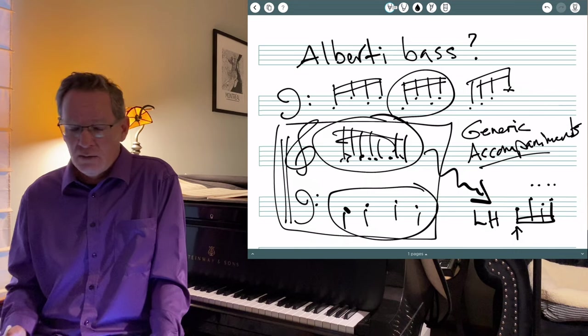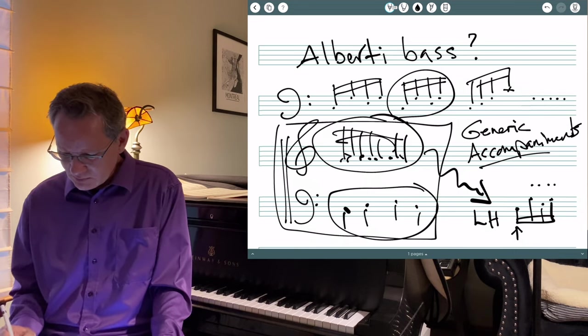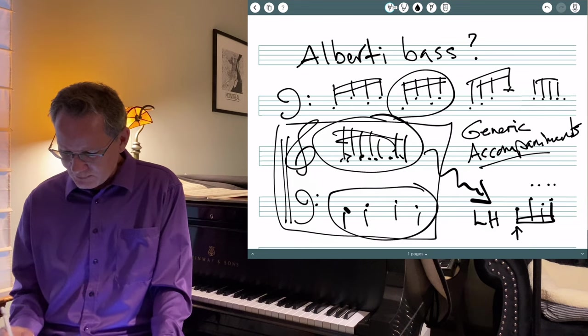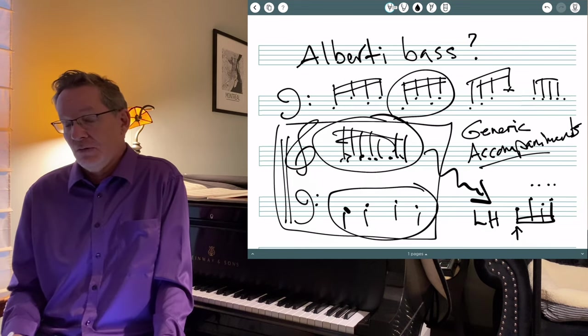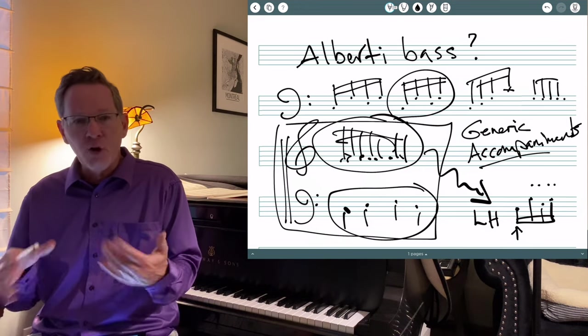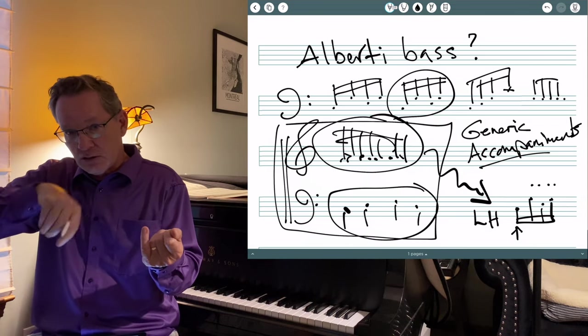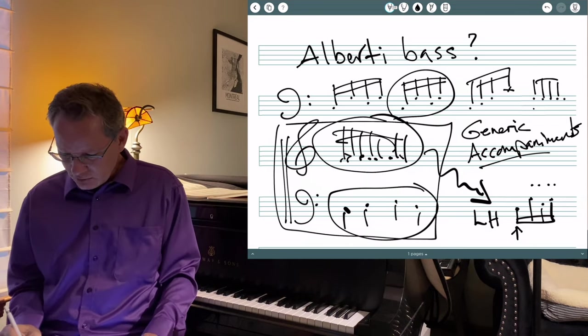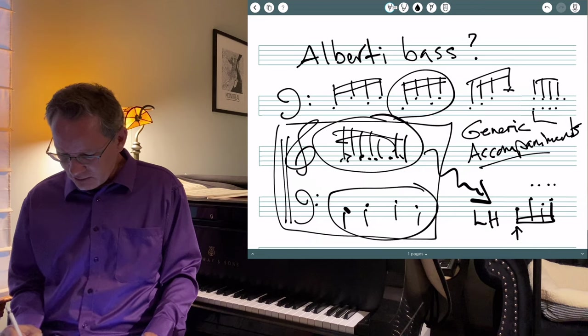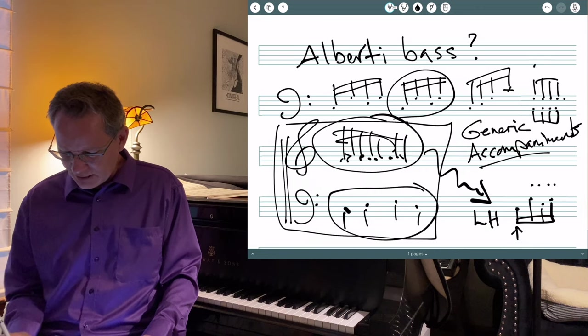Other ones, a really famous one for strings is just each member of the string section just plays eighth notes. And those are going to be what's called detache, which is where there's no bowing written on it. It's just the bow goes back and forth. So, you might have cellos down here doing this. You could have bass as an octave above that. You could have something else playing other members of the chord up here.